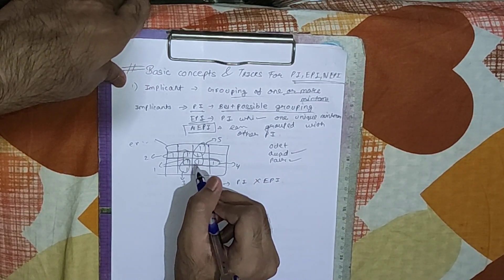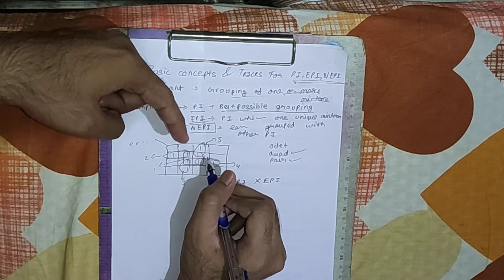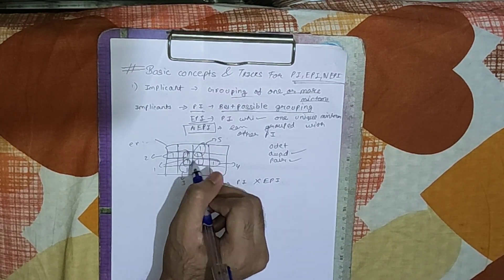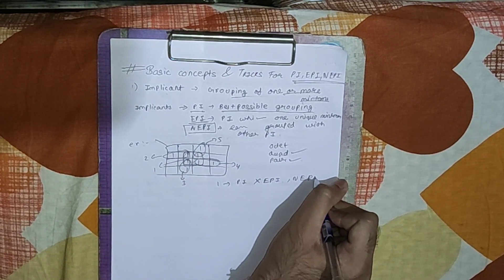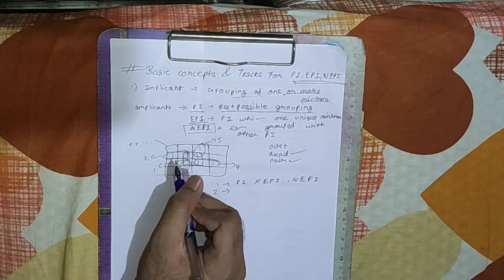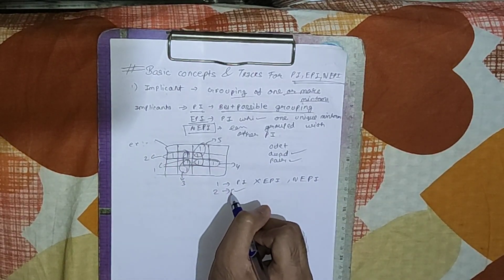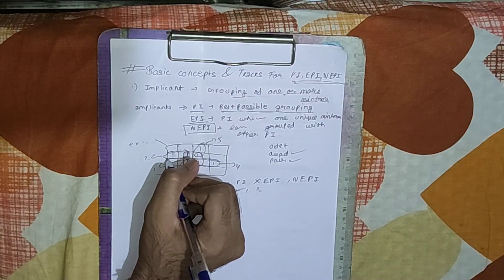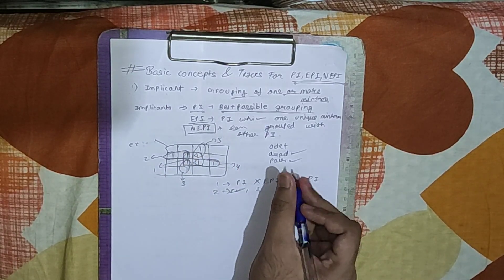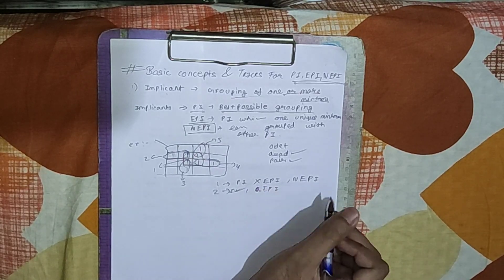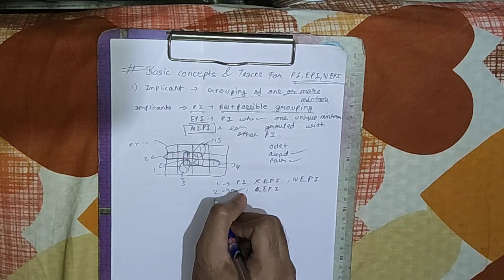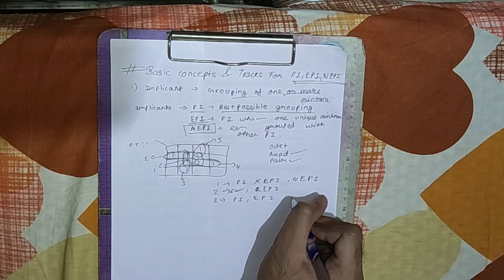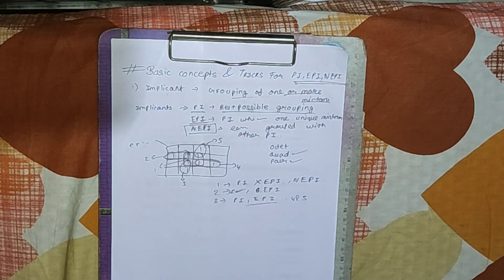Let us check whether group one is a NEPI. Each of its min terms are paired with another prime implicant — yes. So it is a non-essential prime implicant. Now checking group two: is it an implicant? Yes. Is it a prime implicant? Yes, it is the best possible group. Is it an EPI? Here, this one min term is not paired with another prime implicant, so it is an EPI. Groups three, four, and five are also the same as group two — they are prime implicants and EPIs, not non-EPIs.